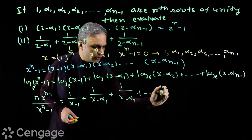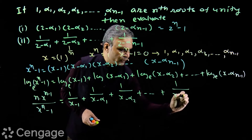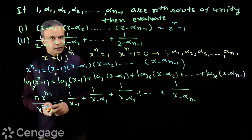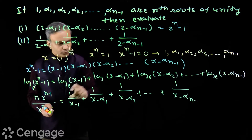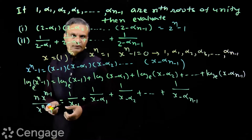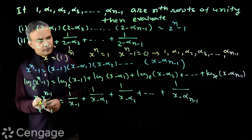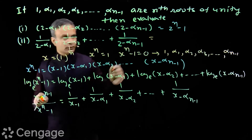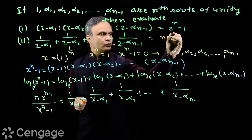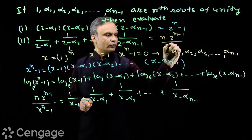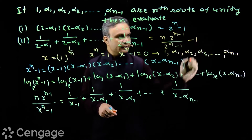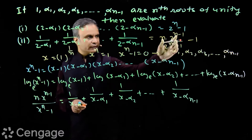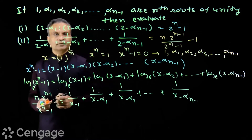To get the required value, we put x = 2. The left side becomes n·2^(n-1)/(2^n - 1). The right side gives 1/(2-1) + 1/(2-α₁) + ... + 1/(2-αₙ₋₁), so we subtract 1 from the left side to get the sum. This is a good combination of algebra and calculus.